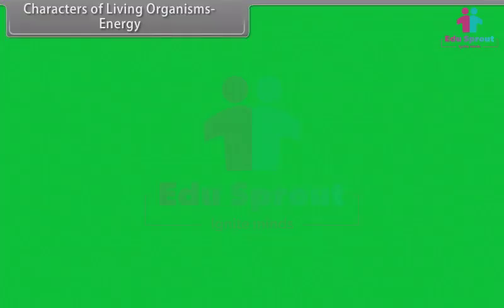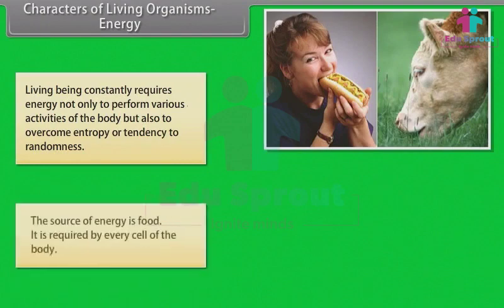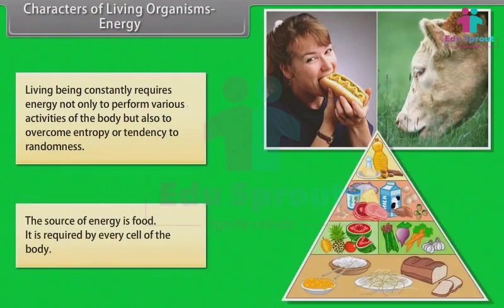Energy: Living beings constantly require energy not only to perform various activities of the body but also to overcome entropy or tendency of randomness. The source of energy is food. It is required by every cell of the body.